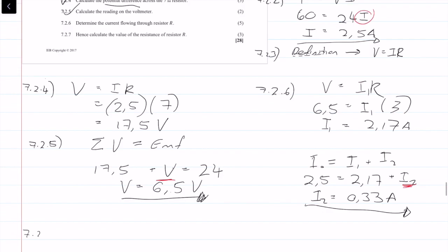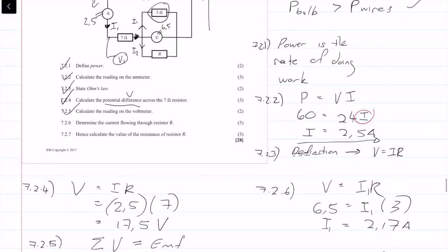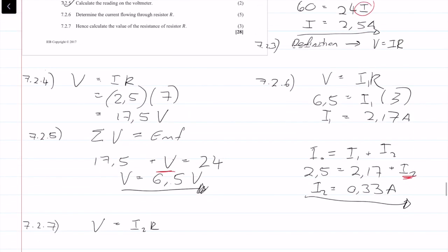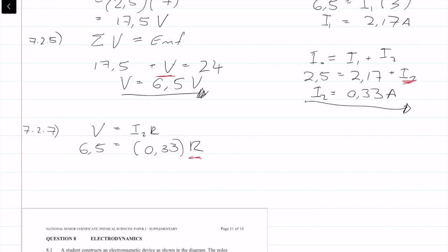Question 7.2.7: calculate the value of resistance R. Using Ohm's law, V equals I2 times R, where V is 6.5 volts and I2 is 0.33 amps. Solving, R is equal to 19.70 ohms.